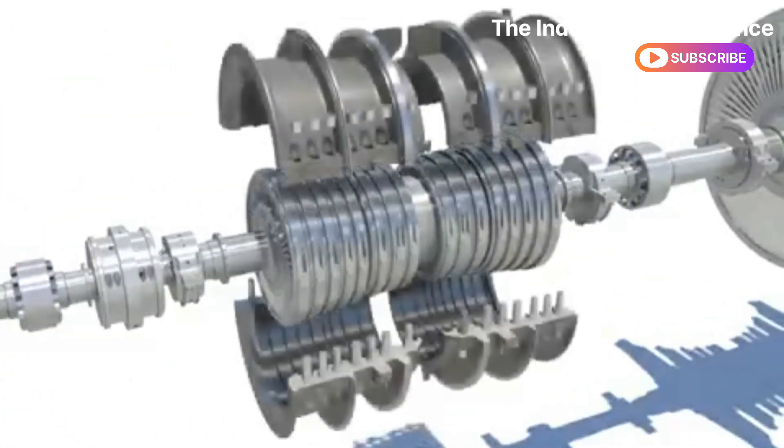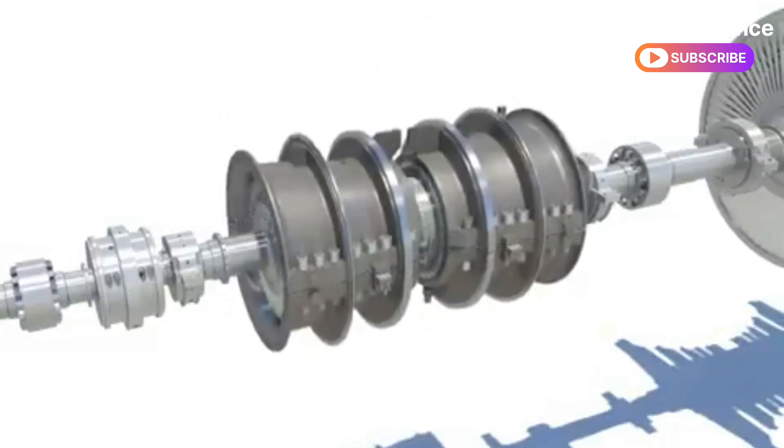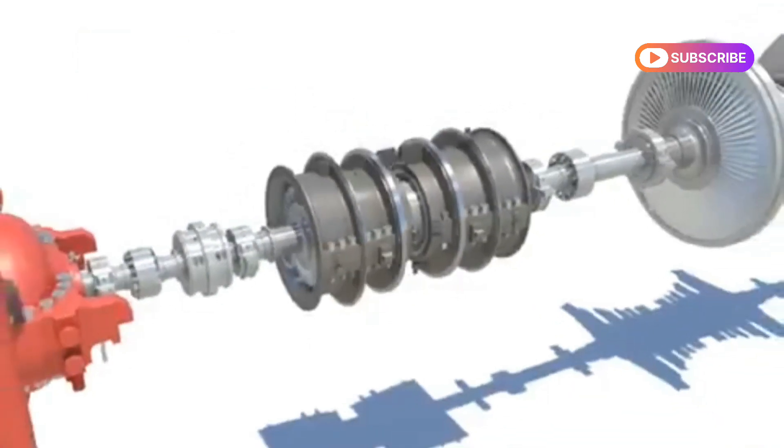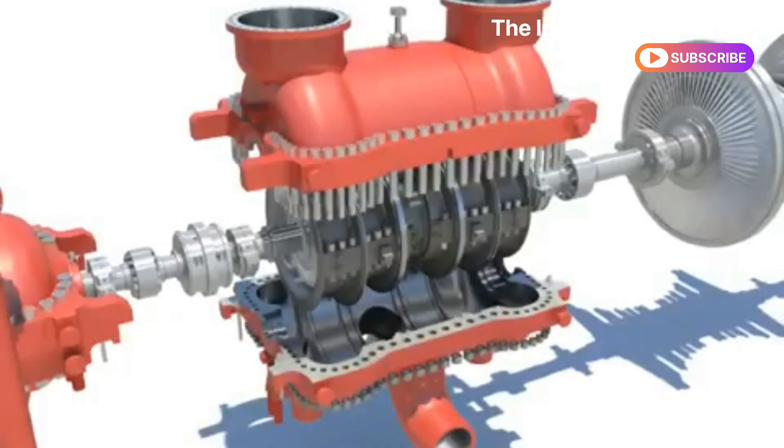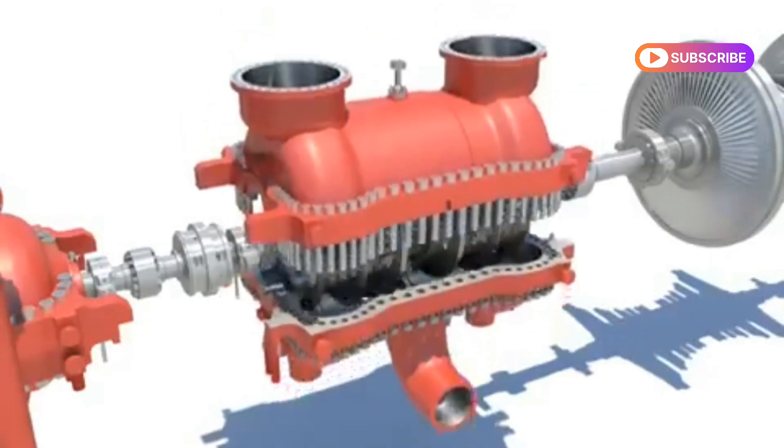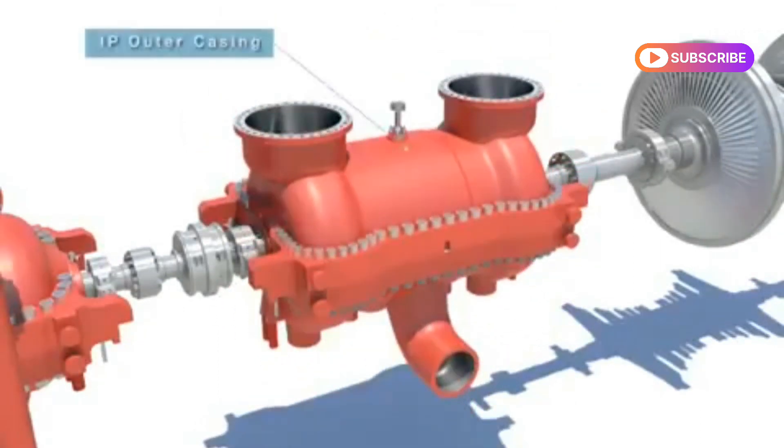The IP inner casing is an intermediate pressure turbine internal container, bears the diaphragm, and works for blocking when bucket and other shaft gets damaged. The IP outer casing is an intermediate pressure turbine external container and works for blocking the inside and the outside.